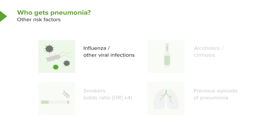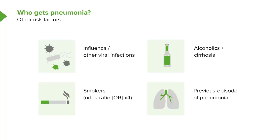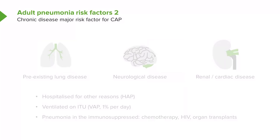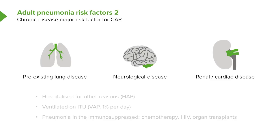Secondary bacterial pneumonia after influenza was the major cause of death in past pandemics — for example, the post-World War I pandemic that killed 20 million people, mostly from pneumococcal and staphylococcal pneumonia following influenza. Other risk factors include alcoholism or liver cirrhosis, smoking, a previous episode of pneumonia — which makes you two to three times more likely to have another — and chronic diseases such as COPD, dementia, previous stroke, renal impairment, and cardiac failure.